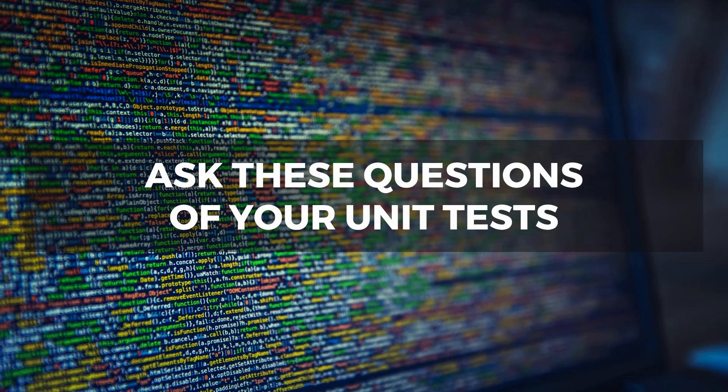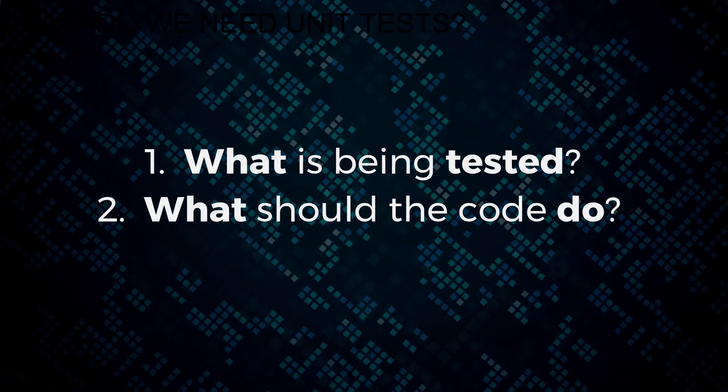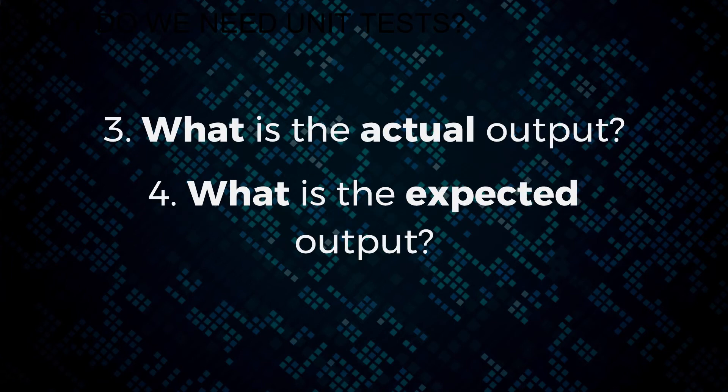Ultimately, ask these four questions of your unit tests: Number one, what is being tested? Number two, what should the code do? Number three, what is the actual output when you run the test? And number four, what is the expected output? Numbers three and four should be equal — if they're equal, your test will pass.